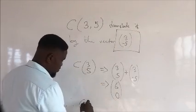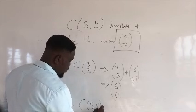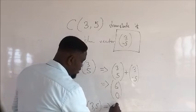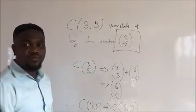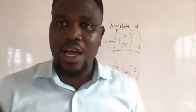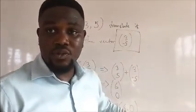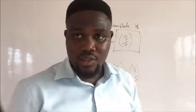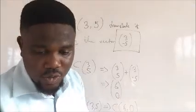So the new vector is what? (6, 0). So therefore, C, that is vector (3, 5), has now become C prime (6, 0). So simple—all you need to do is add it to it. I'm going to take about three examples, then you'll get it. As we keep solving, you get it. Translation is so easy.